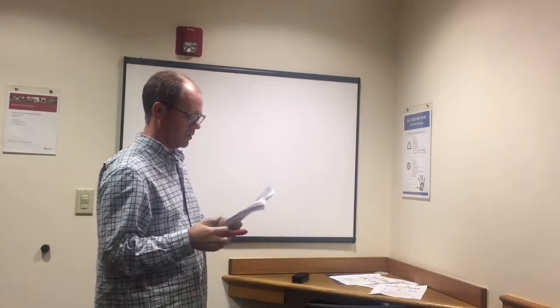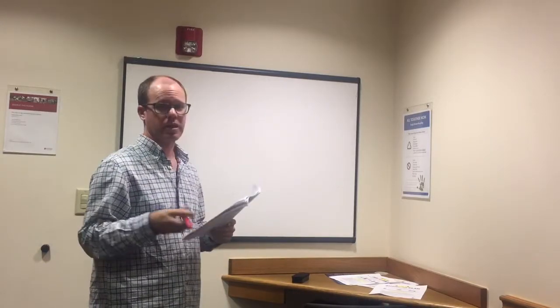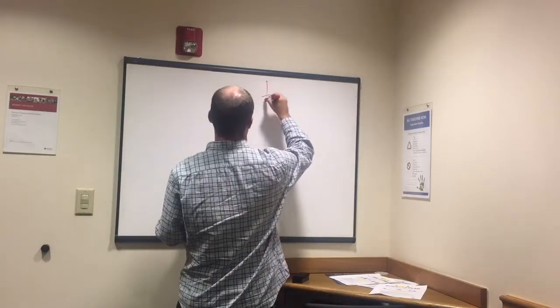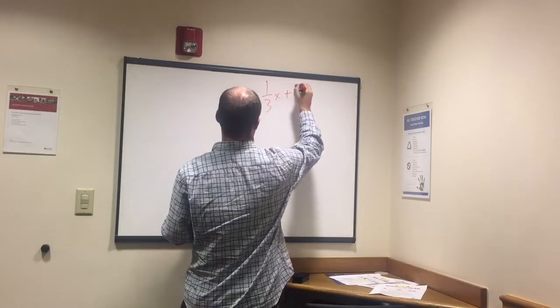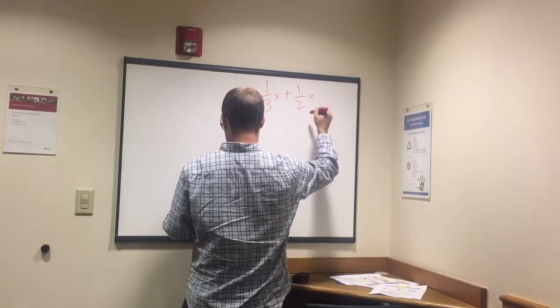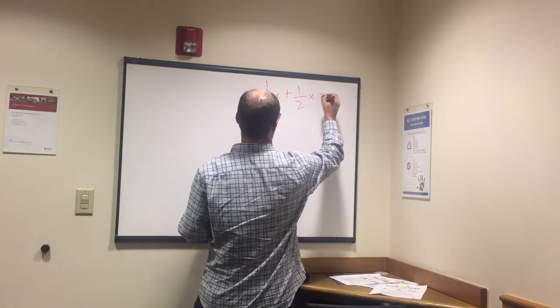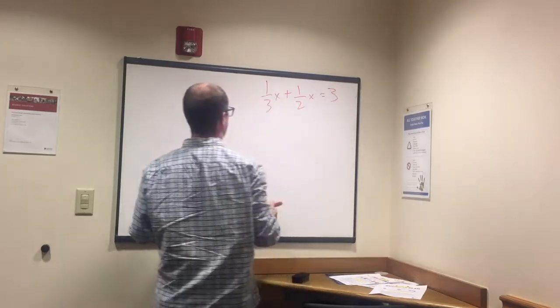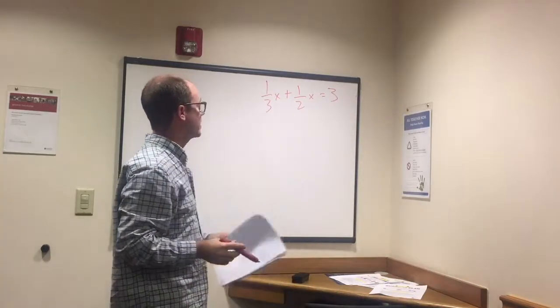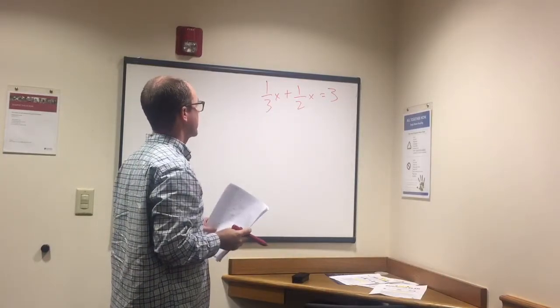Two left. So now it's with a fraction and variable we're adding here. So we got 1 third x plus 1 half x equals 3. And what is x? So we're adding, just because there's a variable there, don't let that throw you off.